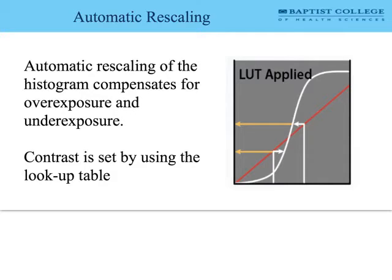As technologists, we are responsible for maintaining standards that limit patient exposure and must look for sources other than the displayed image to detect dose creep. The computer uses a lookup table to perform automatic rescaling, similar to the H&D curve from chapter 10. When the computer initially gets the data, it would demonstrate just a flat line of exposure values, but it automatically rescales and generates a contrast curve, changing the numbers until we get appropriate contrast in our image. Automatic rescaling compensates for overexposure and underexposure, and contrast is set using this lookup table.